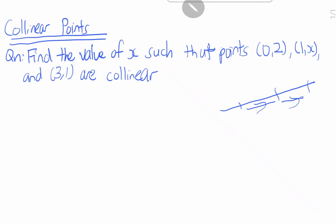So let's say we are supposed to find the value of x. Point (0,2) is point A, (1,x) is point B, and (3,1) is C, such that A, B, and C are collinear.